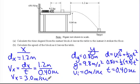If we take a look at what the questions have asked us, A asks us to calculate the time elapsed from the instant block A left the table to the instant it struck the floor. That was the time for the Y.